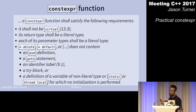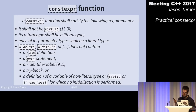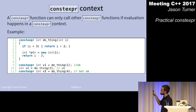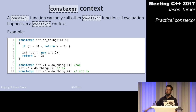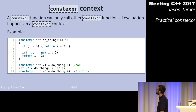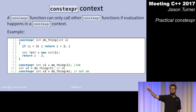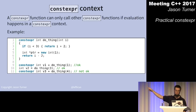A constexpr function can only call other constexpr functions if evaluation happens in a constexpr context. A function that might call new is perfectly acceptable when not invoked in a constexpr context, but trying to execute it in a constexpr context fails at compile time.